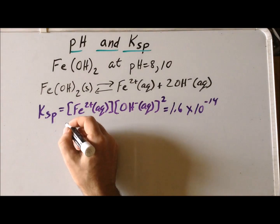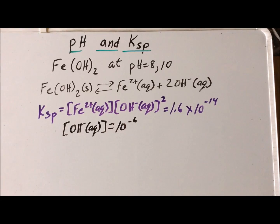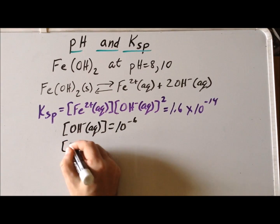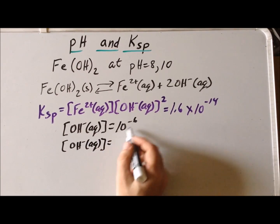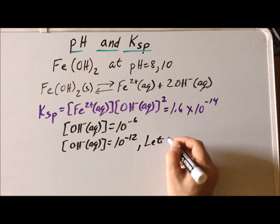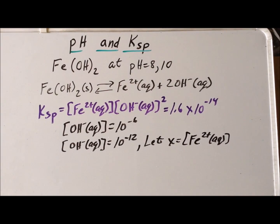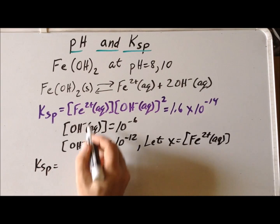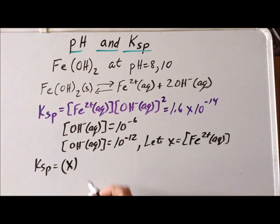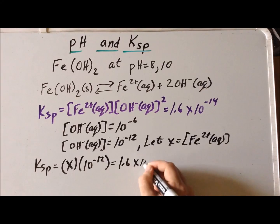Next, in our Ksp equation we set [OH⁻] to 10⁻⁶, because that is what we determined from the pOH. Since the equation has [OH⁻] squared, that term equals (10⁻⁶)² = 10⁻¹². At the same time, we let x equal the concentration of iron 2 plus ion. Substituting into the Ksp expression, we replace [Fe²⁺] with x, replace [OH⁻]² with 10⁻¹², and set this equal to the Ksp value of 1.6 × 10⁻¹⁴.